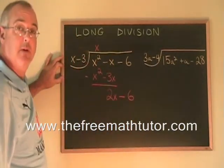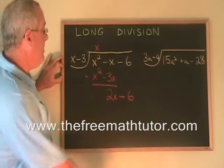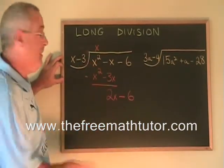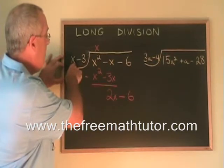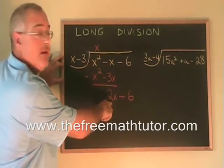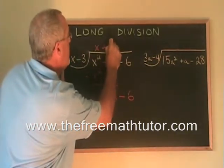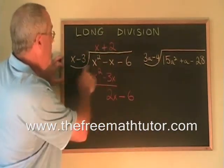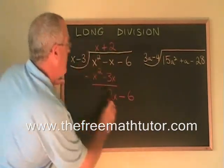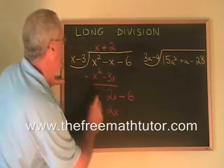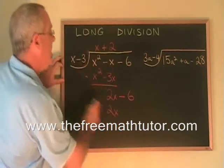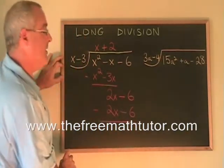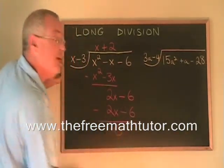Now we do the same procedure again, but this time we're using the 2x instead of the x squared. What do I have to multiply x by to get 2x? Positive 2. So I write plus 2 here. Then we multiply the positive 2 by the whole binomial. 2 times x is 2x, and 2 times negative 3 is minus 6. When we subtract, we're going to get a zero down here. We're finished.